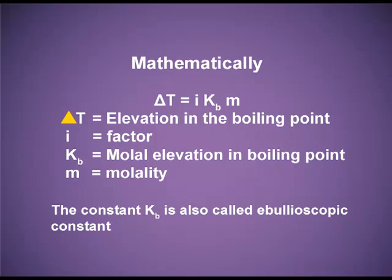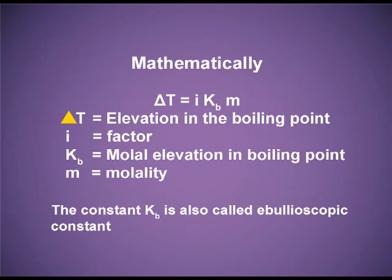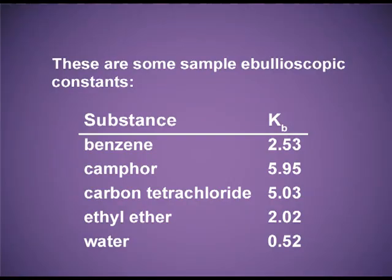Mathematically, ΔT = i × K_B × m. Here, ΔT_B is the elevation in boiling point; i is Van't Hoff's factor, which I will explain later; K_B is the molar elevation boiling point constant, also known as the ebullioscopic constant, with units of Kelvin·kg per mole; and m is molality — the number of solute particles per 1 kg of solvent. Some sample ebullioscopic constants: for benzene K_B = 2.53 K·kg/mol, for camphor it is 5.95, and for water it is 0.52. These values are important when solving numericals based on elevation in boiling point, and you should at least learn the values for benzene and water.